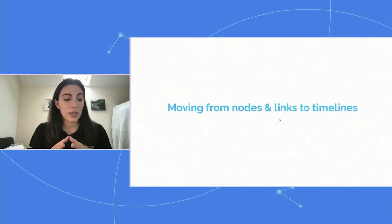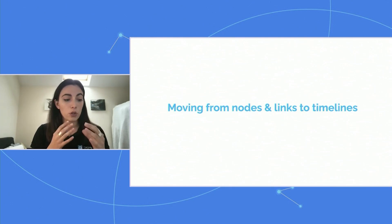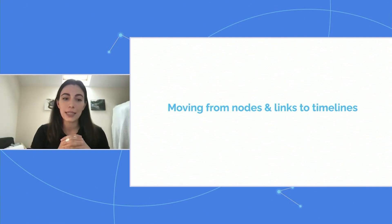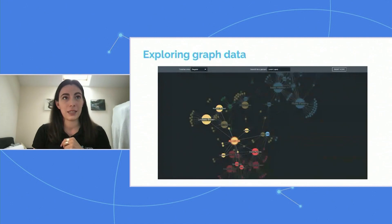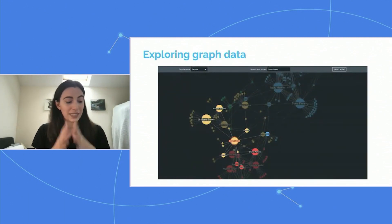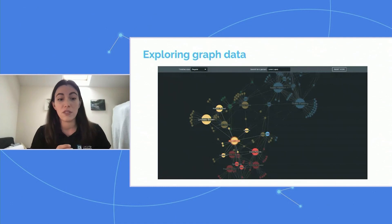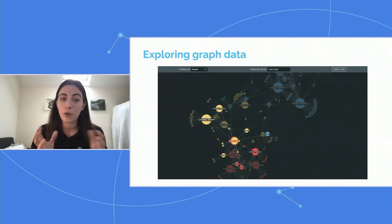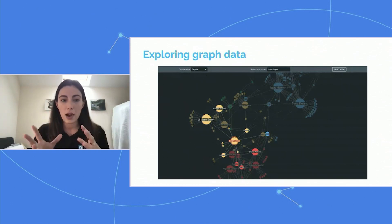Over the next 10 minutes, I want to introduce you to a different way to visualize your graphs, going from nodes and links to an approach we're calling visual timeline analytics. When I say graph visualizations, what images come to mind? Probably something looking like this. We're all familiar with the node-link approach to graph visualization. It's flexible, it's scalable, it's instantly intuitive even if your end users have never worked with graph data before. But while this approach can help us see what, where, and how, it can be difficult to understand when.